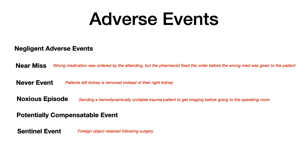A near miss example: the wrong medication is ordered by the attending physician, but the pharmacist doing a double-check on all orders realizes the wrong medication was ordered and stops it from being given to the patient. The patient could have received a potentially lethal wrong medication, but the pharmacist caught it and it was never dispensed. That's a near miss — there was almost an adverse event, but it was caught in time.